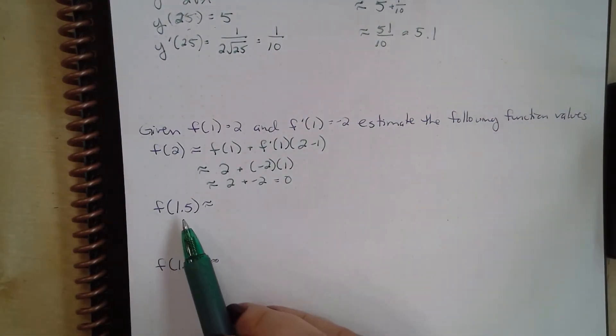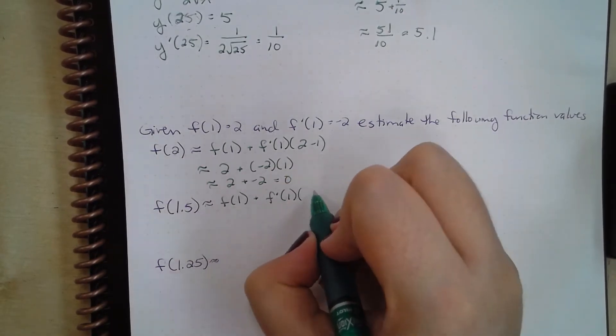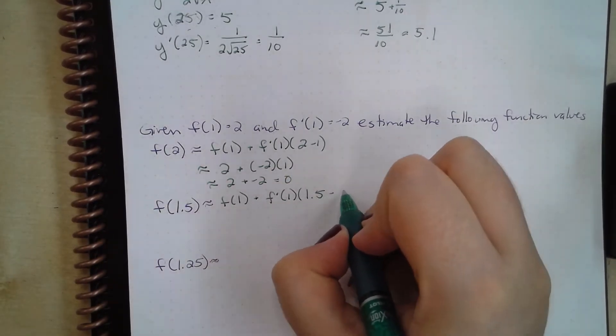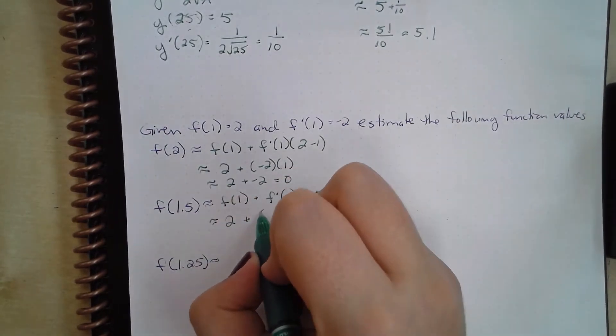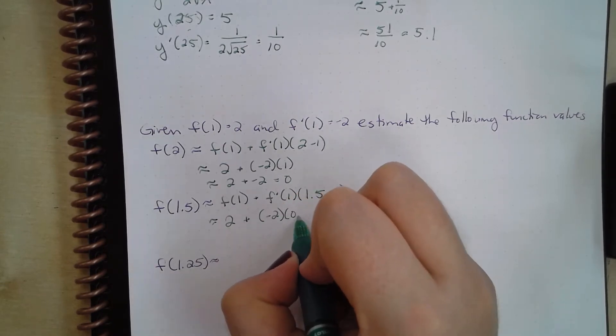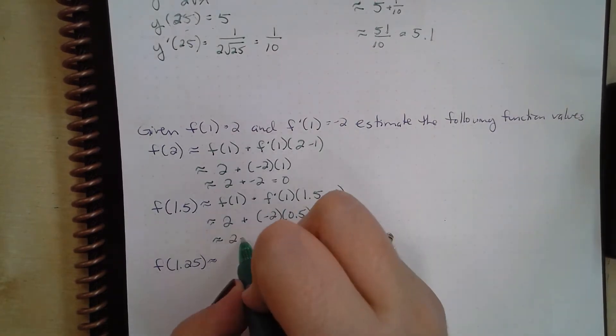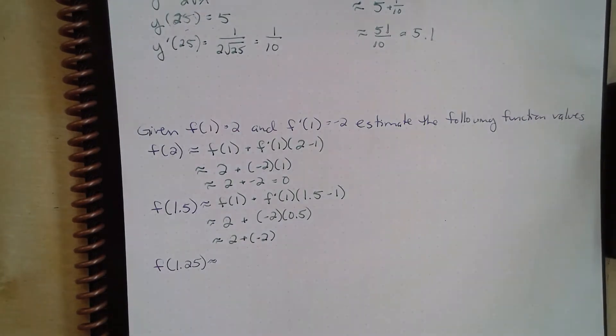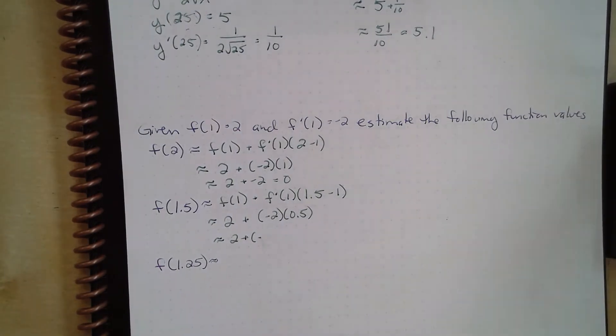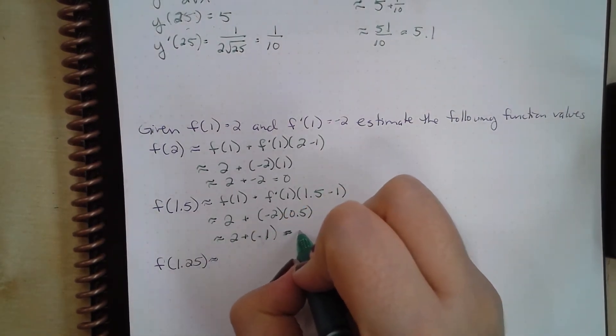We can also do this with f(1.5). f(1.5) is going to be approximately f(1) plus f'(1) times (1.5 minus 1). So I'm going to have 2 plus negative 2 times 0.5, which is going to be approximately 2 plus negative 1, which is approximately 1.